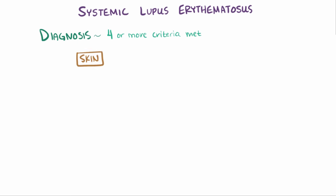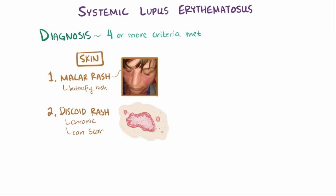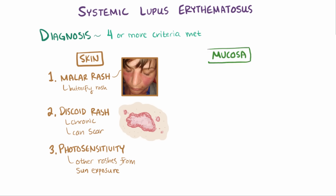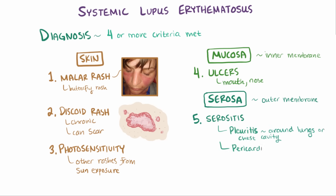The first few criteria involve the skin in sun-exposed areas: a malar rash over the cheeks sparing the nasolabial folds (butterfly rash) appearing after sun exposure; a discoid rash — chronic plaque-like patches in sun-exposed areas that can scar; and general photosensitivity. The fourth criterion is ulcers in the mucous membranes of the mouth or nose. Lupus can also cause serositis — inflammation of the outer membrane — manifesting as pleuritis (lung lining) or pericarditis (heart lining).